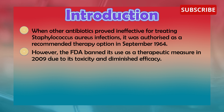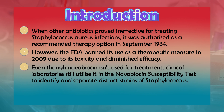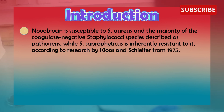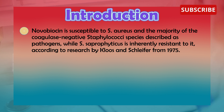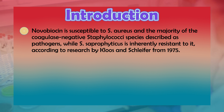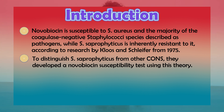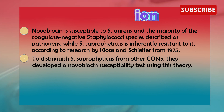However, the FDA banned its use as a therapeutic measure in 2009 due to its toxicity and diminished efficacy. Even though novobiocin isn't used for treatment, clinical laboratories still utilize it in the novobiocin susceptibility test to identify and separate distinct strains of Staphylococcus. Novobiocin is susceptible to Staphylococcus aureus and the majority of coagulase-negative staphylococci species described as pathogens, while Staphylococcus saprophyticus is inherently resistant to it, according to research by Coles and Stutloper from 1975. To distinguish Staphylococcus saprophyticus from other coagulase-negative staphylococci species, they developed a novobiocin susceptibility test using this theory.